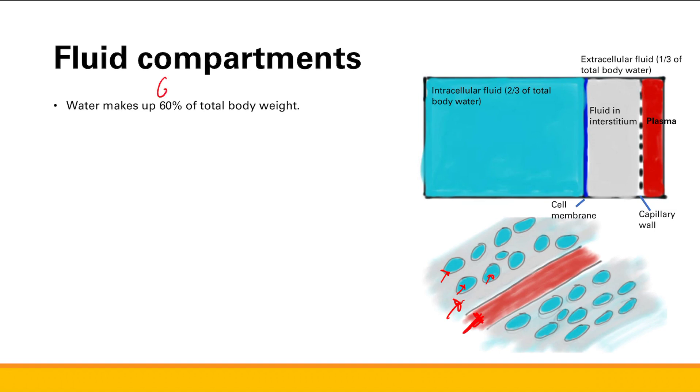The way you can remember that is with the 60-40-20 rule. Because 60% of total body weight is water, and then two-thirds of that total water is intracellular, so 40% of total body weight is intracellular. And finally, 20% of total body weight is extracellular.